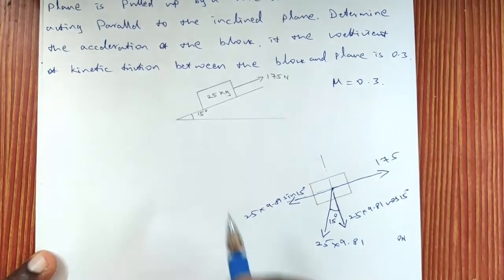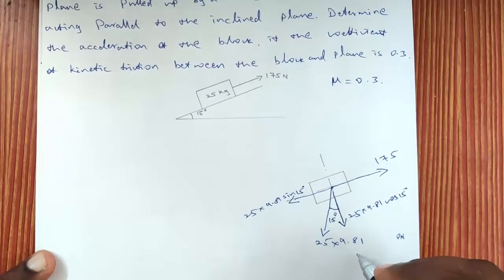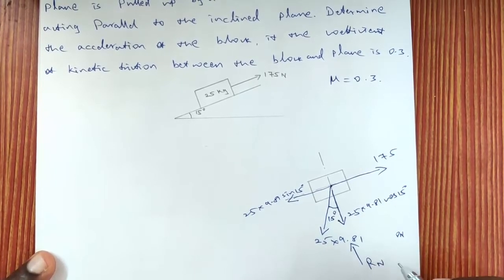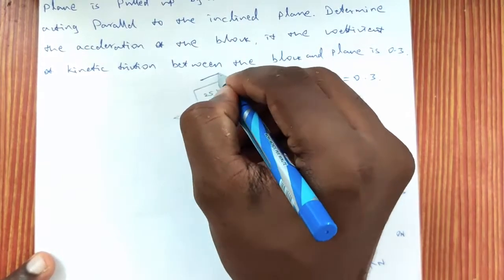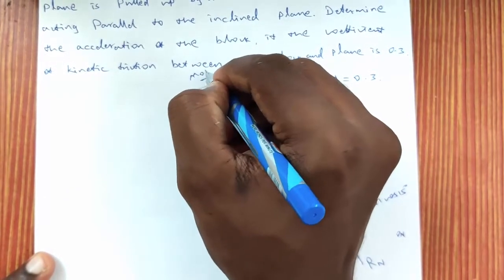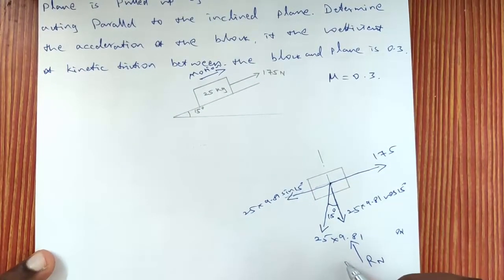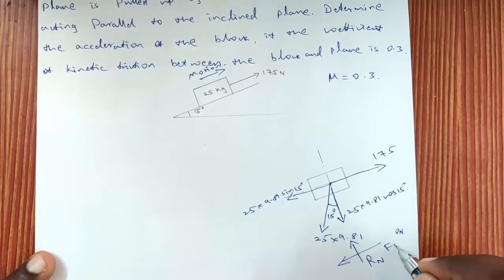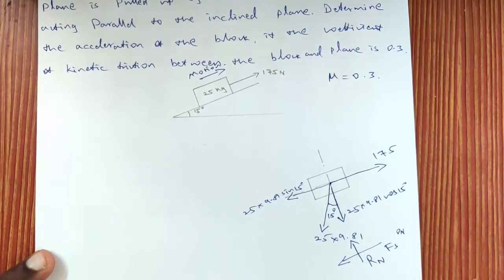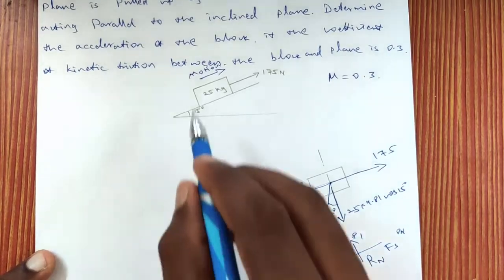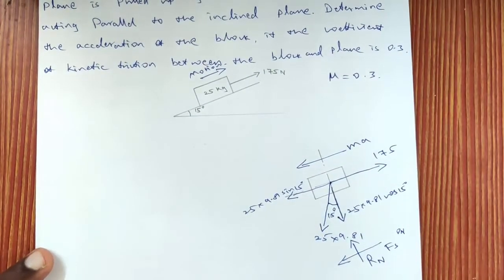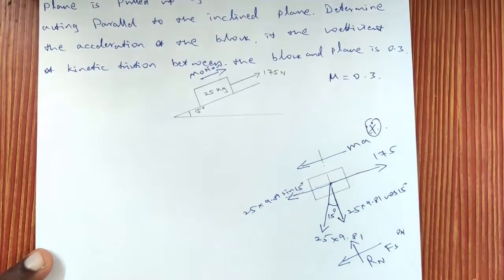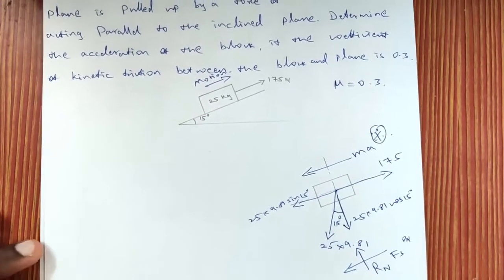Because of friction between the two contact surfaces, a normal reaction RN acts perpendicular to the contact surface. Since the block is being pulled up, the motion is towards the right-hand side, so the frictional force Fs acts in the opposite direction — towards the left. Also importantly, since the motion is towards the right, the inertial force ma acts towards the left-hand side direction.